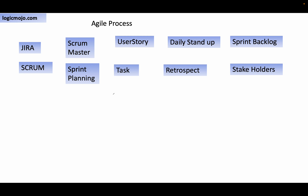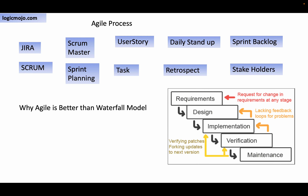Before going into the details of all these terms with examples, let's see first why the industry rejected the waterfall model and adopted the agile process. The waterfall model is a sequential model. You gather requirements from the customer, start development, do architectural design, implement it, code it, test it, and then deploy into the production environment as customer deliverables.